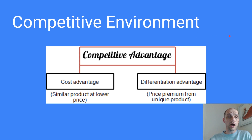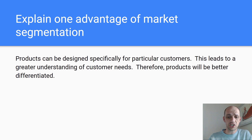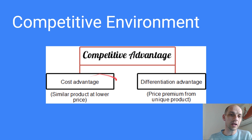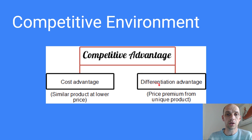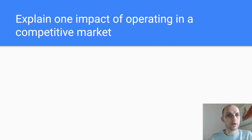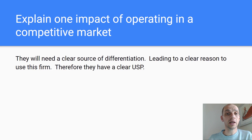Have a look at the competitive environment. The downside of segmentation is that you might not be able to generate the same sort of scale, or the same cost advantages over firms that use more mass production techniques. Regarding the competitive environment: generally, firms will look for a cost advantage or a differentiation advantage — they'll either try to be cheaper or different from competitors. Apple, Audi, and Lidl use this. Explain one impact of operating in a competitive market: they will need a clear source of differentiation, leading to a clear reason to use this firm. Therefore, they have a clear USP.